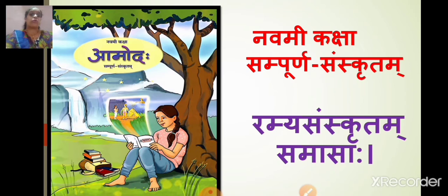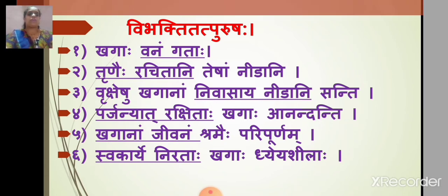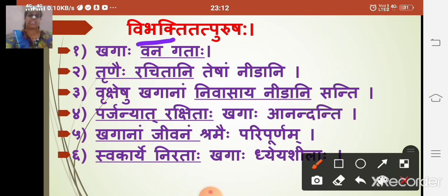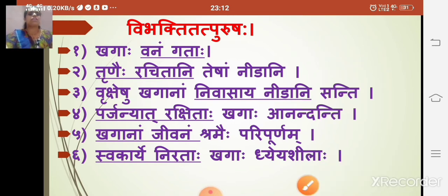Now we have to see the fourth part of samasa. After the itara dvandva samasa and samar dvandva samasa, we continue with vibhakti tatpurush samasa. Vibhakti means prathama, dvitiya, trutiya, chaturthi, panchami, shashti, saptami — these are all the vibhaktis. Prathama vibhakti comes in karmadharaya samasa; from dvitiya to saptami, vibhakti tatpurush samasa is used.